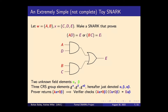What we want to prove about these five field elements is that either A times D equals E, or B times C equals E. The SNARK has two unknown field elements, alpha and beta, and three CRS group elements: G to the alpha, G to the beta, and G to the alpha beta. The prover returns the group element A*alpha + B*beta. The verifier then uses the pairing to multiply (A*alpha + B*beta) and (C*alpha + D*beta) and checks that this equals E*alpha*beta. That's the single check the verifier performs.